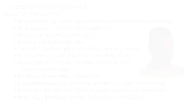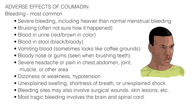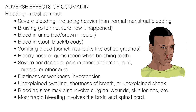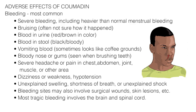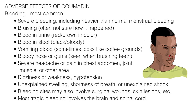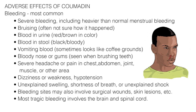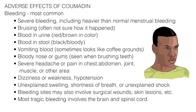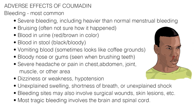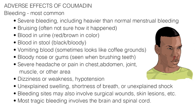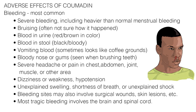The most common adverse effect of Coumadin is bleeding, occurring anywhere in the body, spontaneously, or in response to a minor trauma. Bleeding complications may present as severe bleeding, including heavier than normal menstrual bleeding, inexplicable bruising, blood in urine causing it to be red or brown in color, blood in the stool causing it to be black or bloody, vomiting blood which sometimes looks like coffee grounds, a bloody nose or gums seen when brushing the teeth, severe headache, pain in the chest, abdomen,